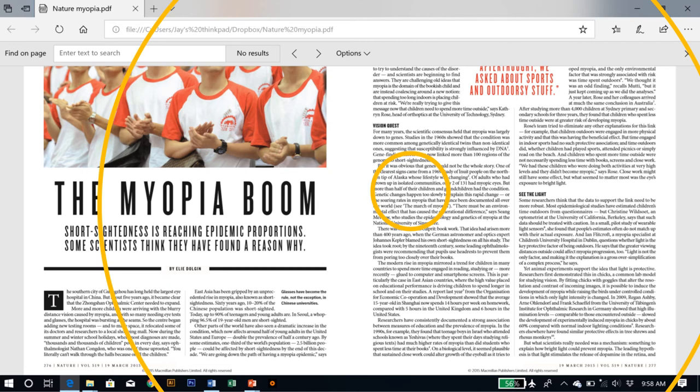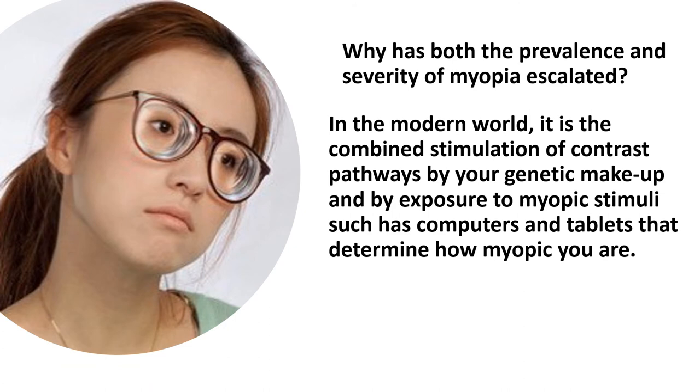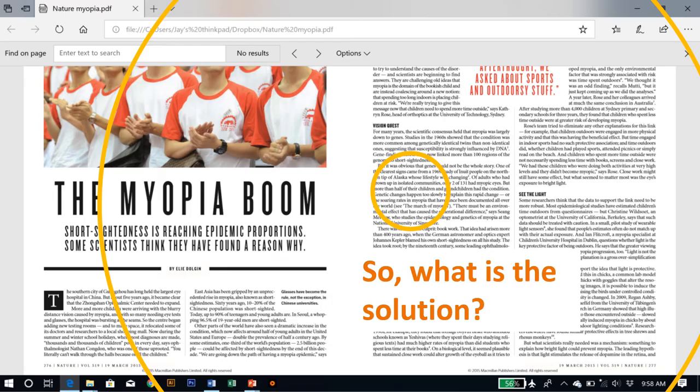This is an image of a screen from a MacBook Pro viewed from a normal viewing distance. The yellow circles are the exact same eccentricities as from the last slide. You can see that unlike the natural world, when a child has a screen in front of her face, not only is central vision that she's accommodated to in perfect focus, her peripheral vision is also in perfect focus. In the natural world, objects in peripheral vision are far away, and if they're in focus, it means that you must be far-sighted and the contrast in the periphery drives the eye to grow. So why has both the prevalence and severity of myopia escalated in the modern world? It's the combination of stimulation of contrast pathways by our genetic makeup and by exposure to myopic stimuli such as computers and tablets that determine how myopic you are.